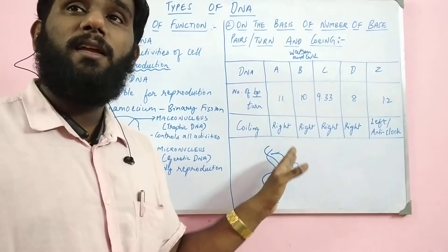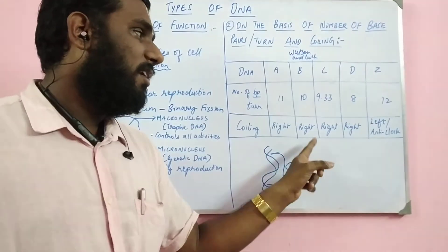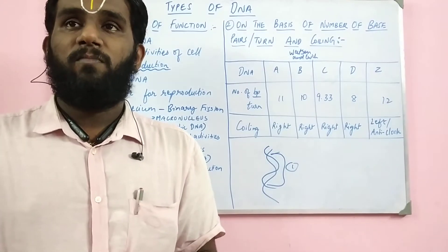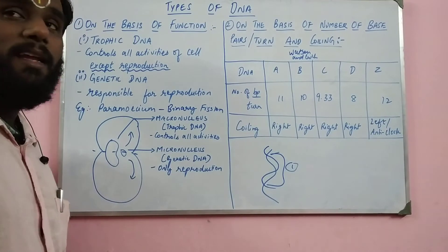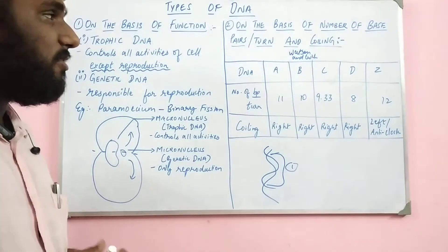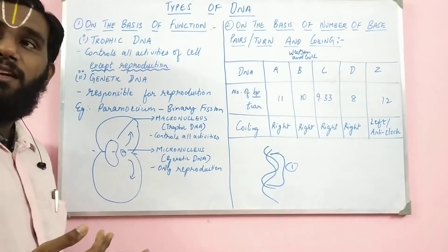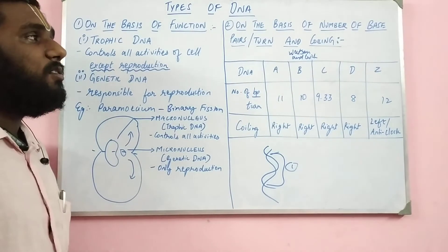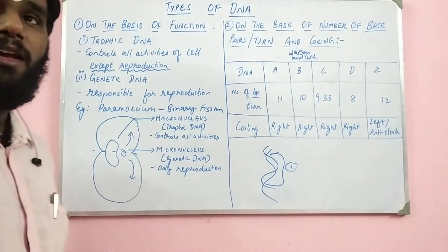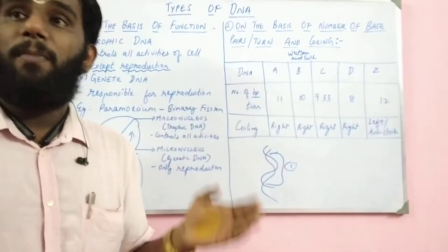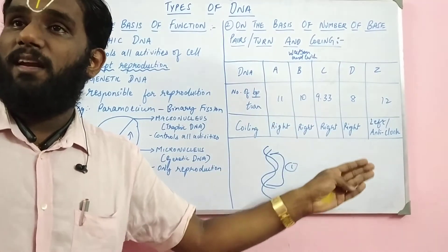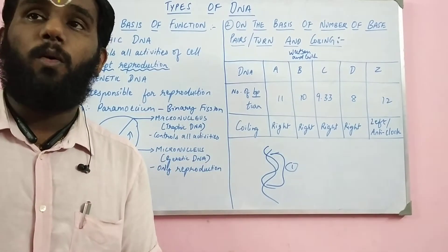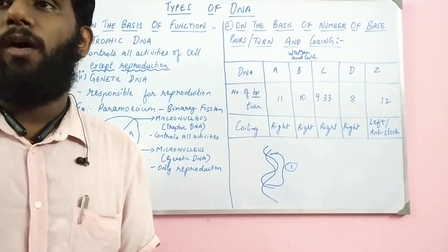Other than Z-DNA, all the other DNA models — A, B, C, and D — are coiled only on the right side. So this is how DNA is classified: on the basis of function as trophic DNA and genetic DNA, and on the basis of the number of base pairs per turn and coiling direction, where Z-DNA is the only DNA which is anticlockwise in coiling.